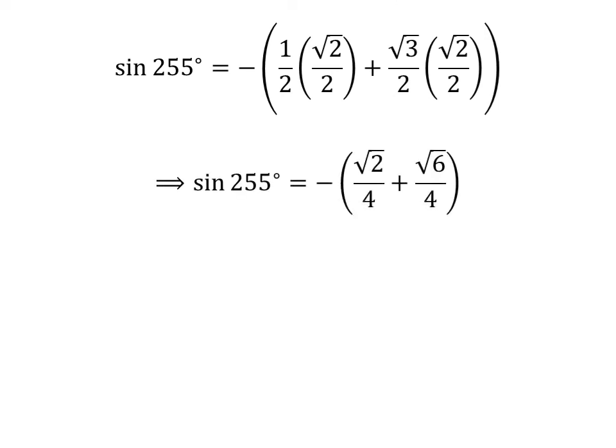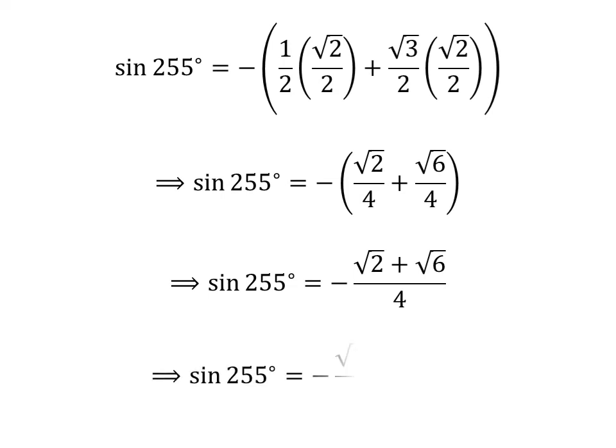Straight multiplication gives us: sine of 255 degrees is equal to minus square root of 2 over 4 plus square root of 6 over 4. Since the denominator of both fractions is the same, sine of 255 degrees is equal to minus the quantity square root of 2 plus square root of 6, over 4. Taking out the common factor square root of 2 in the numerator gives us: sine of 255 degrees is equal to minus square root of 2 times the quantity 1 plus square root of 3, over 4.